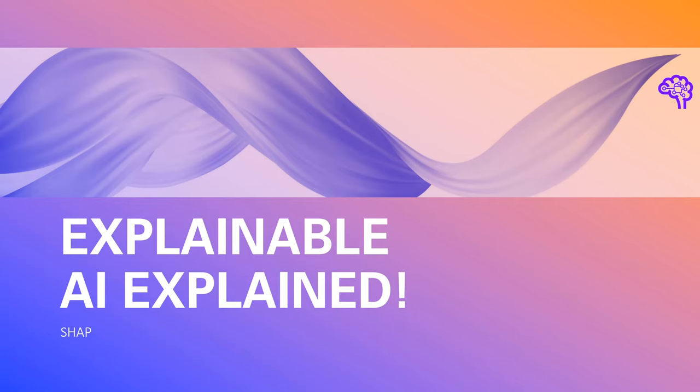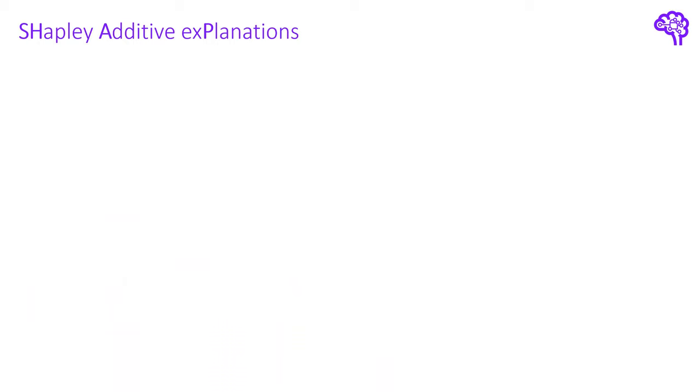Hi everyone, in this video we will have a look at a popular explainable AI technique called SHAP. The idea behind it comes from a different area which is cooperative game theory. So give me one minute to explain how it is used there.